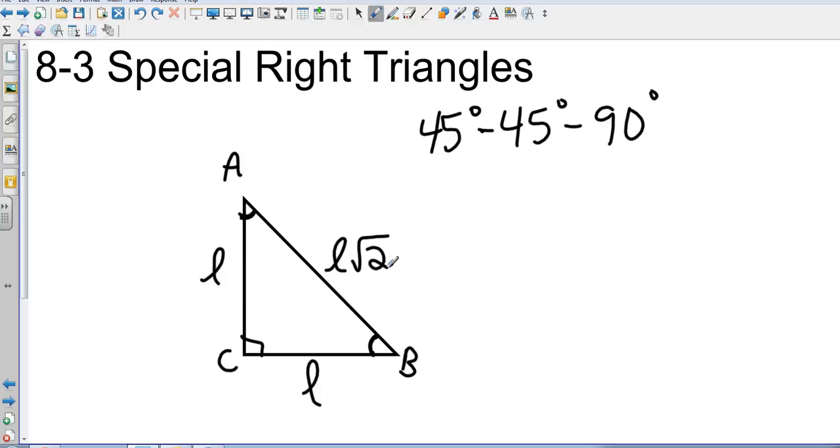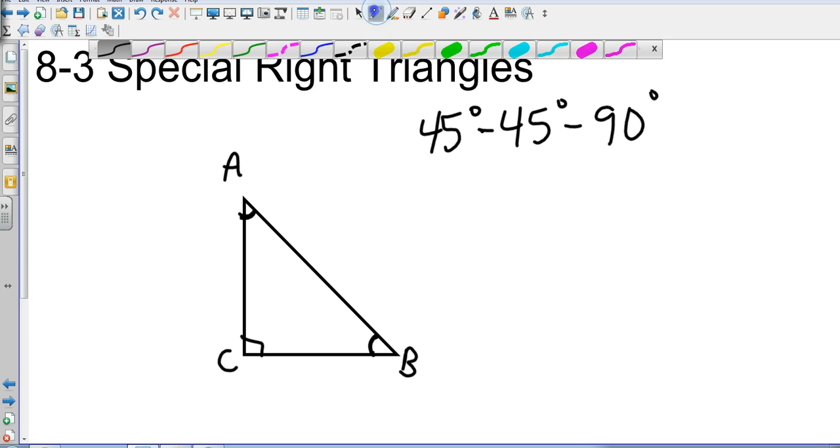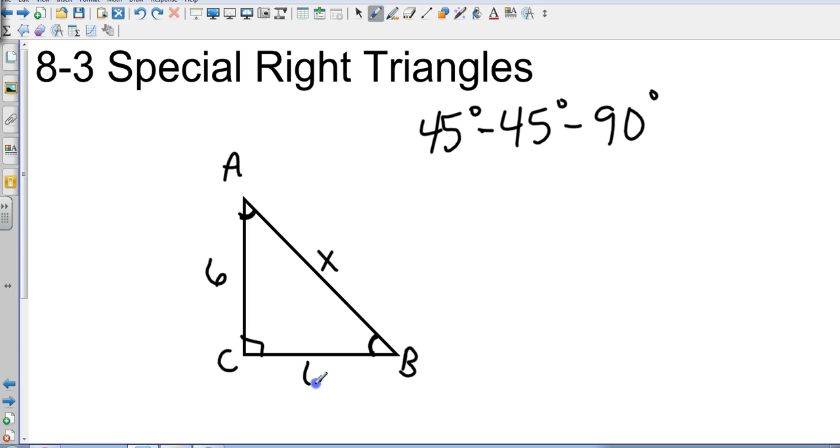Let's look at an example. I am going to say that the hypotenuse is x, one of the legs is 6. So how do I find out what x is? Well, if each leg is 6, then x is going to equal the leg times the square root of 2. So x is going to equal 6 square roots of 2.